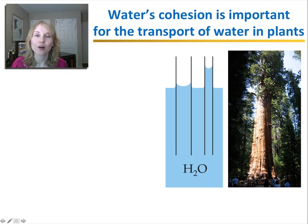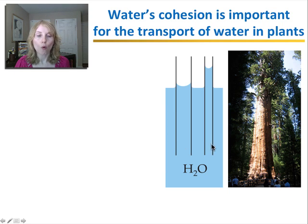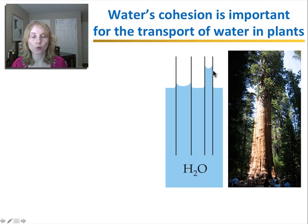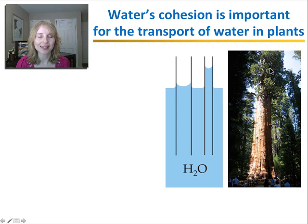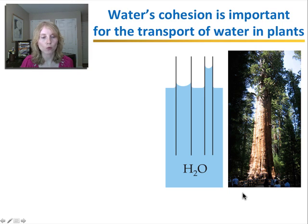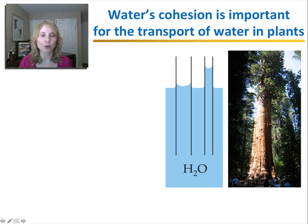Cohesion is also critical for the plant's ability to transport water. Because of cohesion, water can actually travel up capillary tubes — these thin tubes. The thinner the tube, the more easily the water travels up, because it forms a nice column of water due to its cohesion. That is how water can get up even a very tall tree like this giant sequoia. The water travels all the way from the roots to the very tip of the tree, because water is evaporating through the leaves and the evaporation pulls the water up as a single column — made possible by hydrogen bonding.